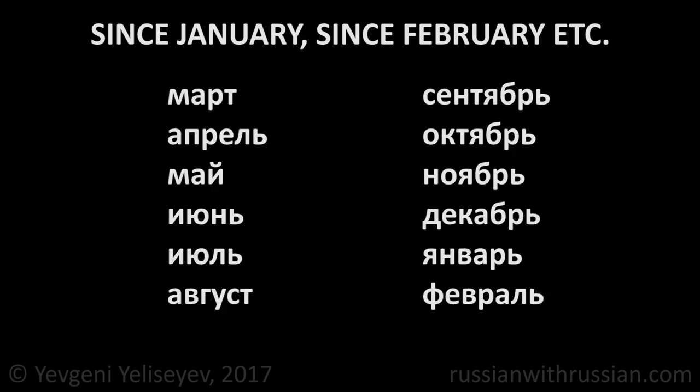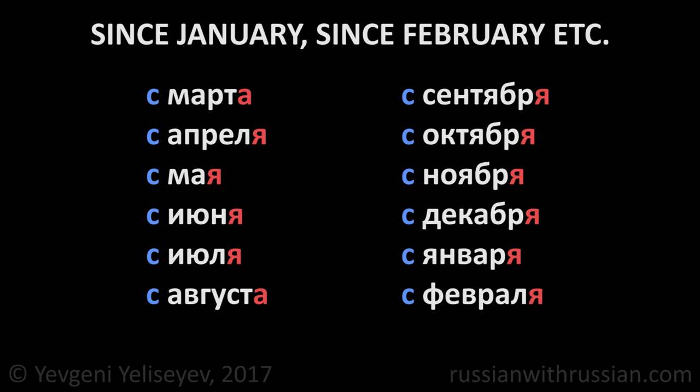To say "since January," "since February," and so on, we use the preposition С and put the name of the month in the genitive case, adding the ending -а after hard consonants and the ending -я instead of the short и and the soft sign.